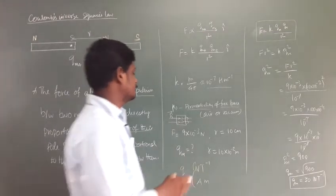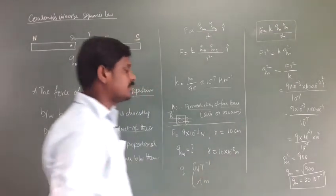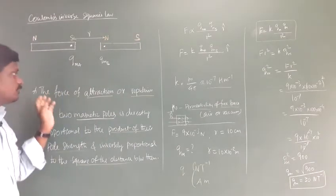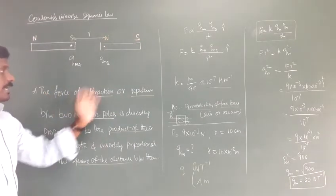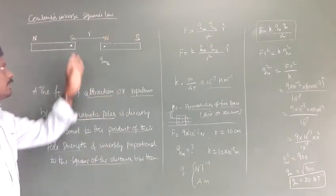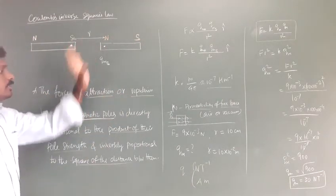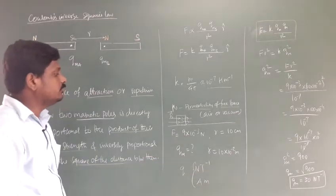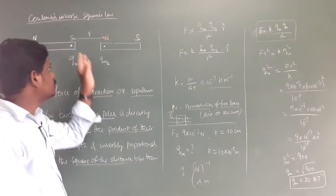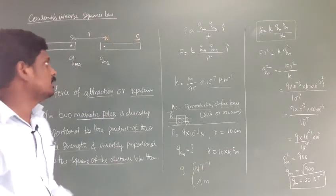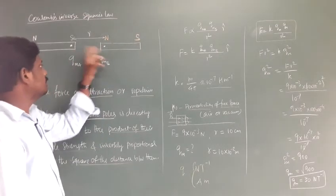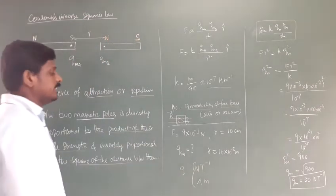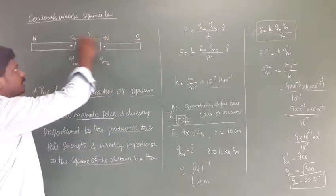Now consider one problem. A force of 9 × 10⁻³ Newton acts between two poles. The distance between the two poles is 10 centimeters. We need to find what is the pole strength.